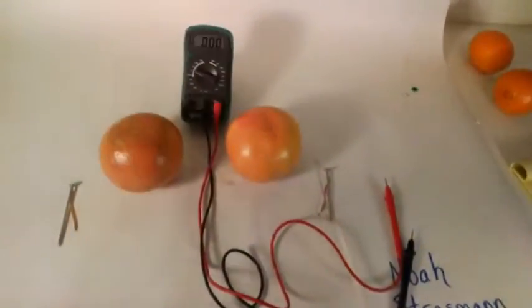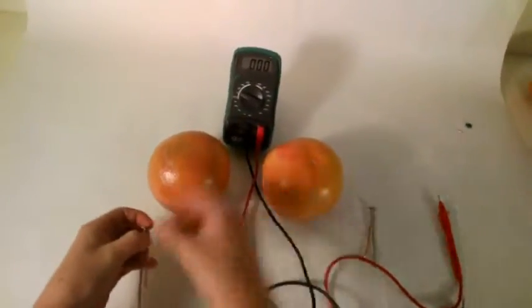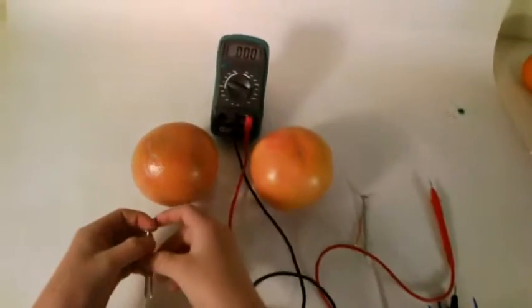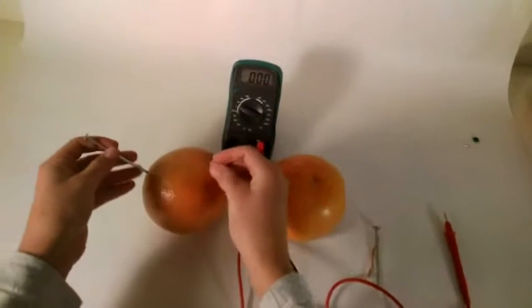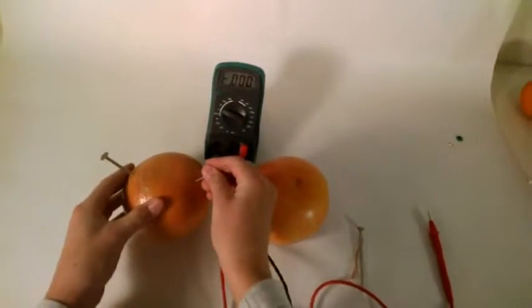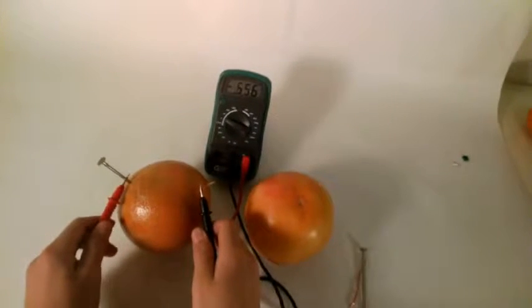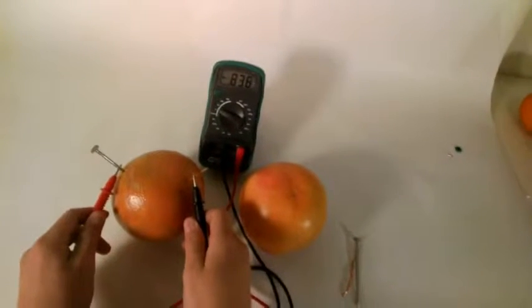So now I have my grapefruits here, and I'm going to do the exact same thing with them. I am just going to stick the zinc nail on this side, and the copper on the other side. I'm going to use my tips in my voltmeter.